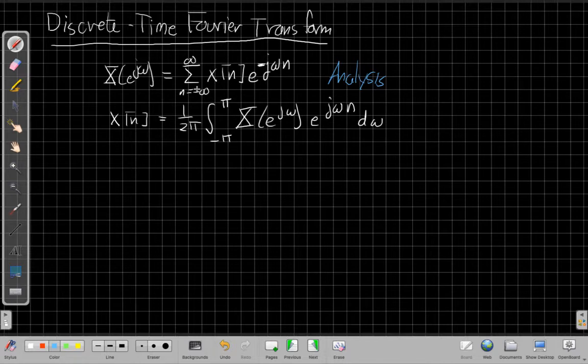The other thing it does, if we think about it, is what happened to ω₀, our fundamental frequency? As 2π over n, as n goes to infinity, the frequencies, the harmonics, get infinitely close together. When things get infinitely close together, we end up with integrals. And so the synthesis equation, while the analysis equation is not too different from what we saw for finding the a_k's, the synthesis equation is different.